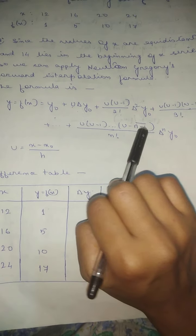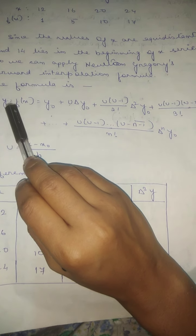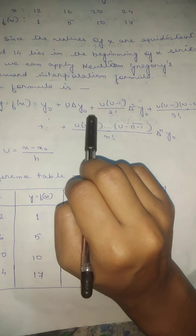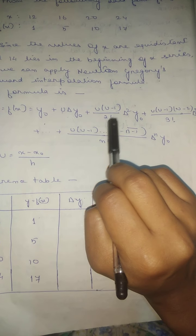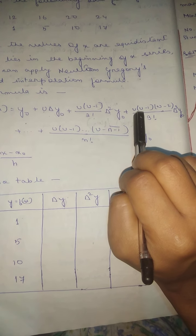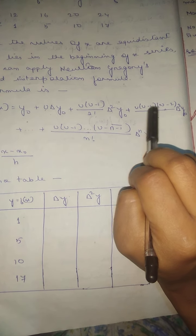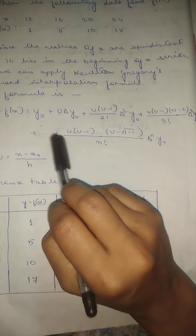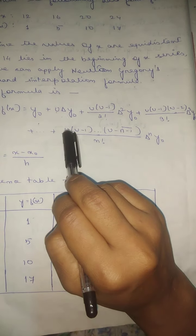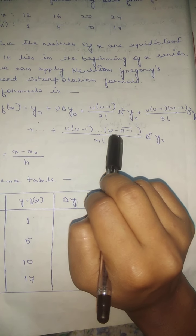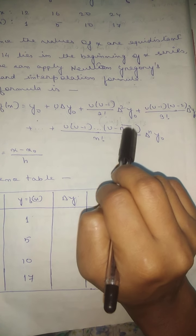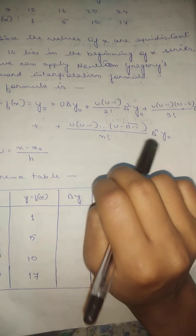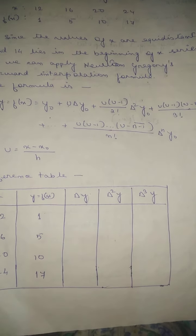Now I will write the formula. The formula is: y = f(x) = y0 + u·Δy0 + [u(u-1)/2!]·Δ²y0 + [u(u-1)(u-2)/3!]·Δ³y0 + ... up to the nth term, where the general term is [u(u-1)···(u-n+1)/n!]·Δⁿy0.